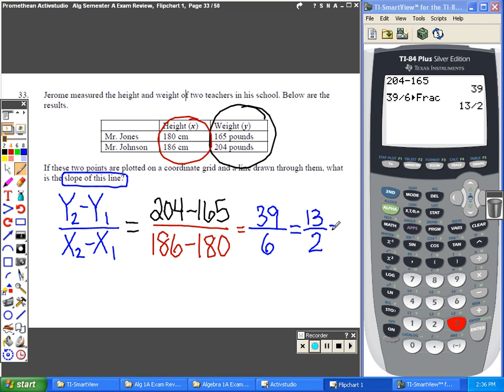Or if you prefer decimals, you can actually just take 13 divided by 2, or 39 and divide by 6, and you should get 6.5. So your slope is equal to 13 over 2 or 6.5.